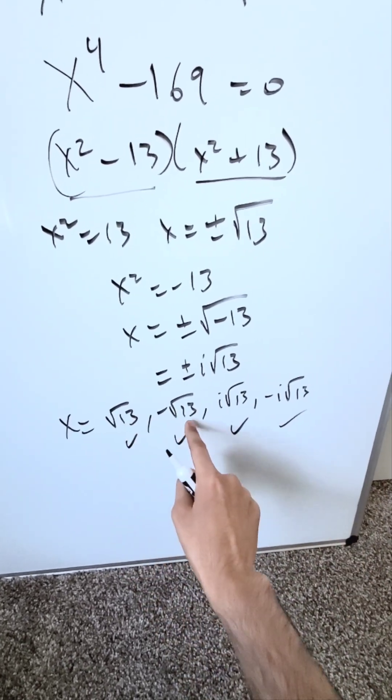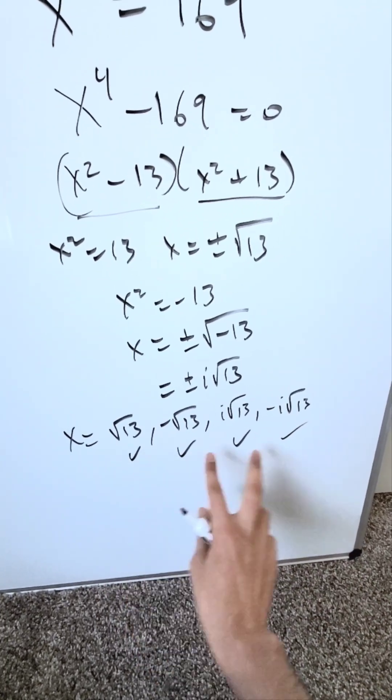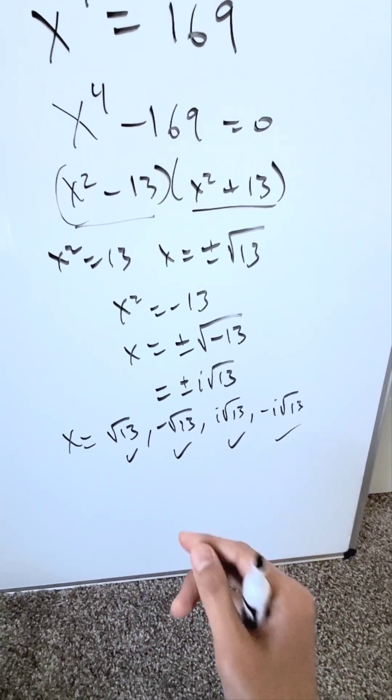Root 13, negative root 13, i root 13, minus i root 13. Four solutions, two real, two imaginary, and they're all correct.